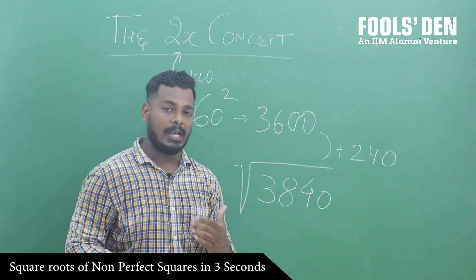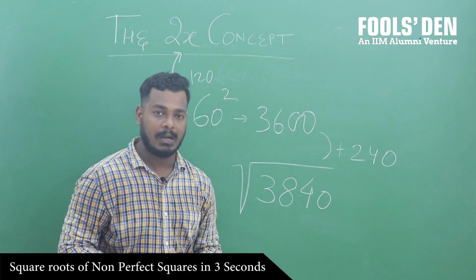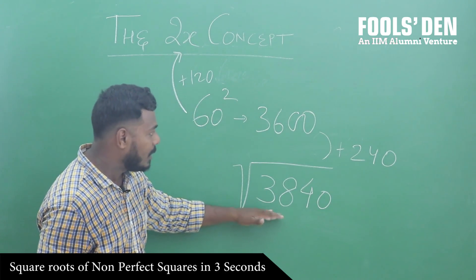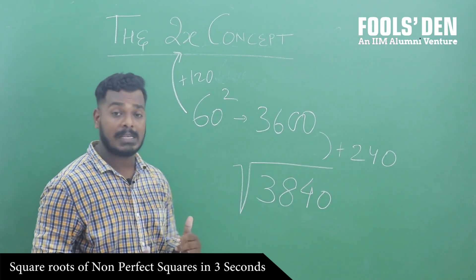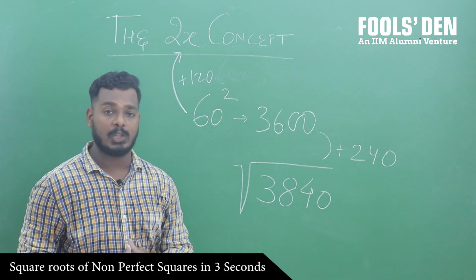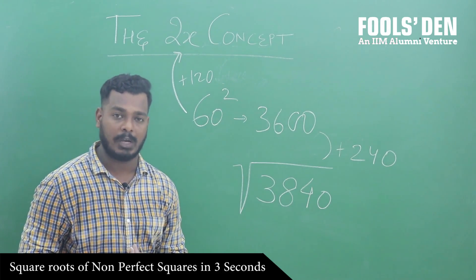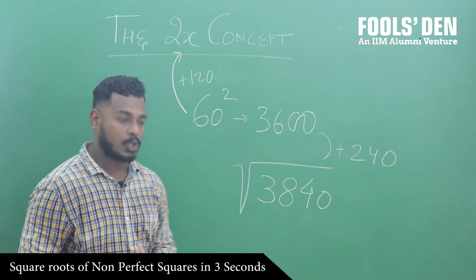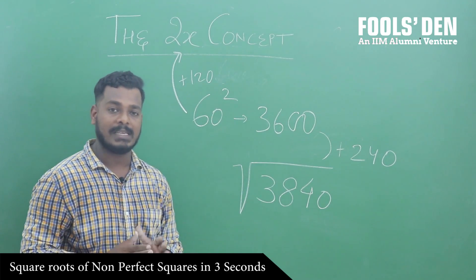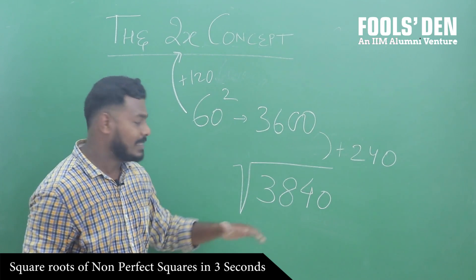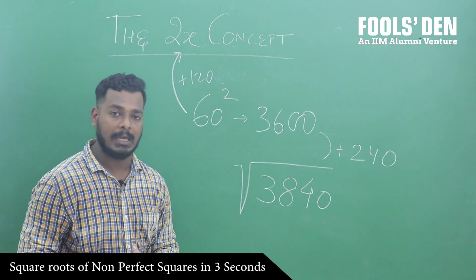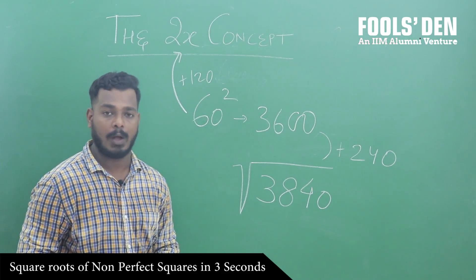अब we know that, using the 2x concept, जब हम 60 से आगे बढ़ते हैं, तो हर अगला square 60 का double, that is 120 से बढ़ेगा. तो 120 को कितनी बार लूँ कि ये 240 का difference cover हो जाए? 120 को दो बार लेने से 240 होता — so इसका square root approximately 62 होगा.